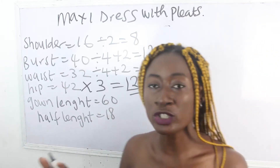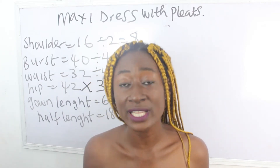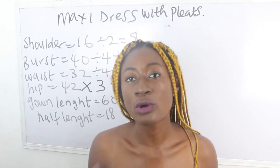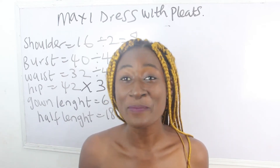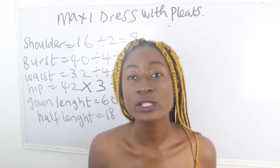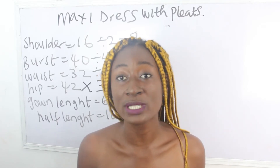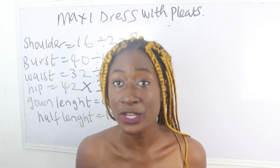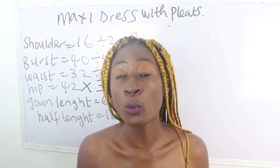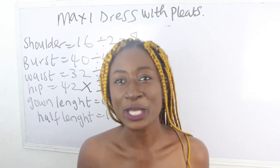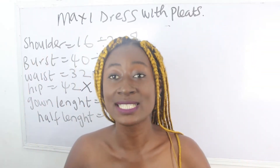Note that if you are working with limited fabric or don't want very full pleats, multiply your hip measurement by 2.5. But if you want very full pleats and have enough fabric, multiply by 3 — that is the standard. So if you are not working with enough fabric, use 2.5; if you want full pleats, use 3.